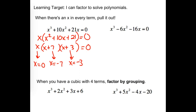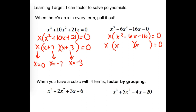Second one — what can we pull out? An x. Take a minute and factor that trinomial piece. What do we end up with? Multiplies to be negative 16, adds up to negative 6: negative 8 and positive 2.